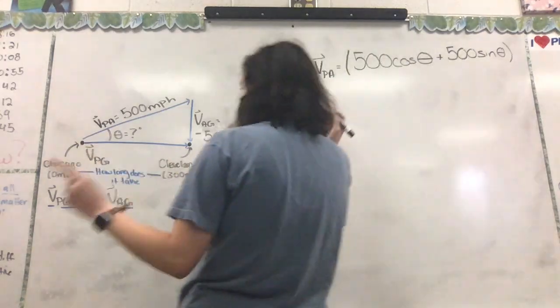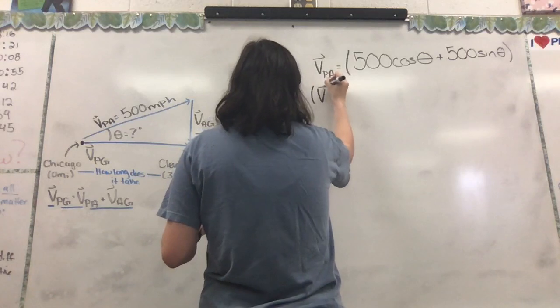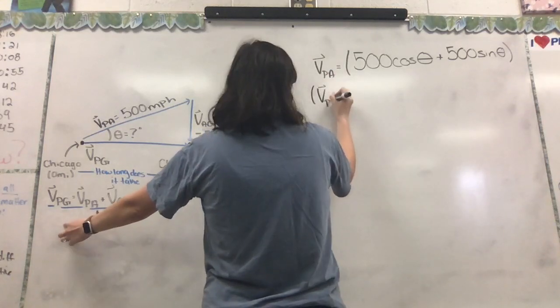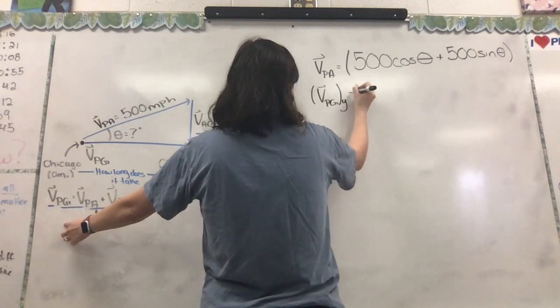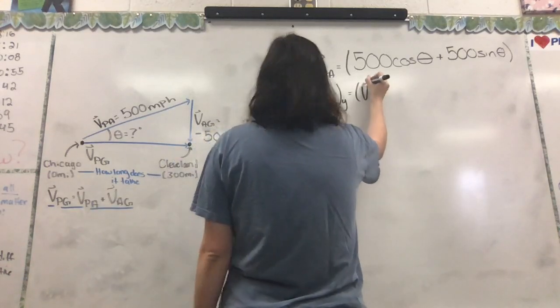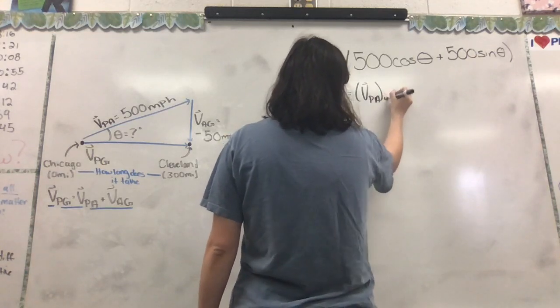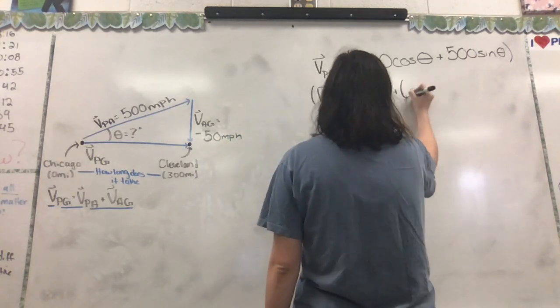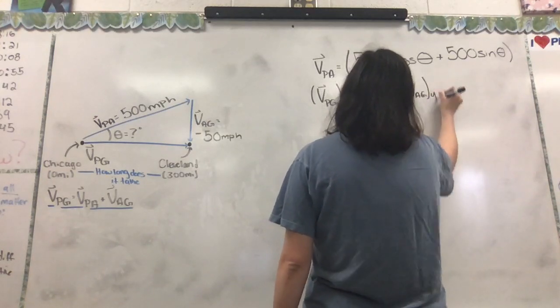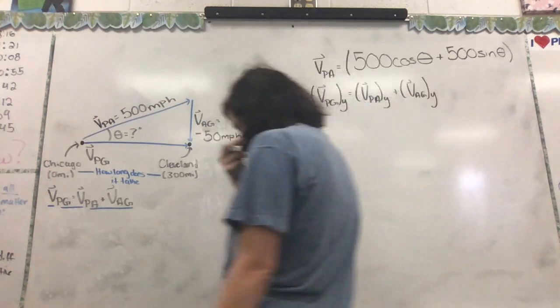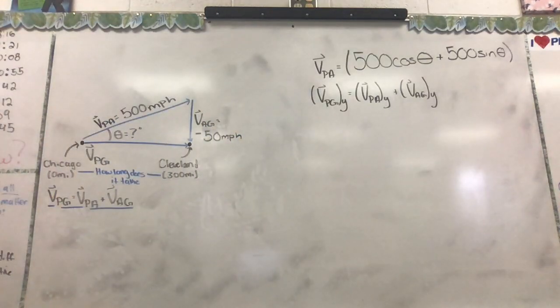So we're going to look at the one with respect to Y, and you'll see why we're doing that in a second. So what that will look like is we'll have the velocity of the plane with respect to the ground Y component equals the velocity of the plane with respect to the air's Y component plus the velocity of the air with respect to the ground's Y component. And this is when you guys see why we chose the Y instead of the X. So the math is a lot easier.